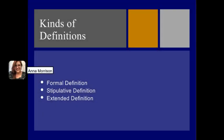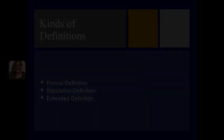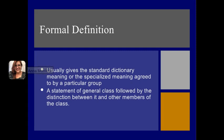There are different kinds of definitions: formal definitions, stipulative definitions, and extended definitions. A formal definition usually gives the standard dictionary meaning or the specialized meaning agreed to by a particular group. A statement of a general class followed by the distinction between it and other members of its class are the standard traits of a formal definition.